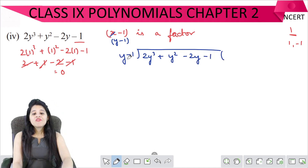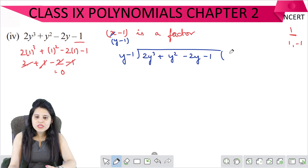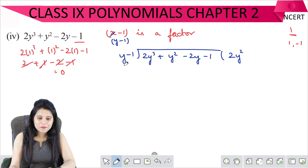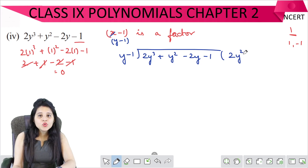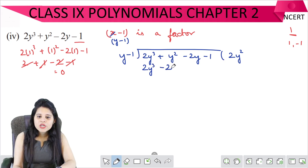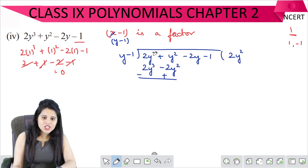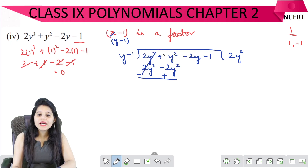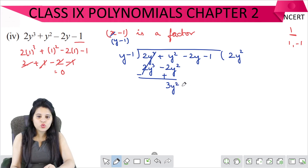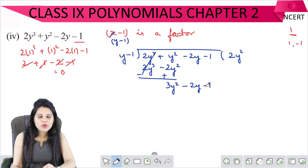Division starts. We will divide y into 2y cubed. First multiply by 2y squared — y into 2y squared gives 2y cubed, and minus 1 into 2y squared gives minus 2y squared. Now we will add minus, then sign change — this cancels out. Plus plus: 2 plus 1 is 3, so this is 3y squared, minus 2y minus 1 as it is.